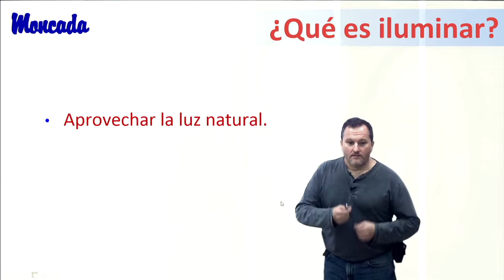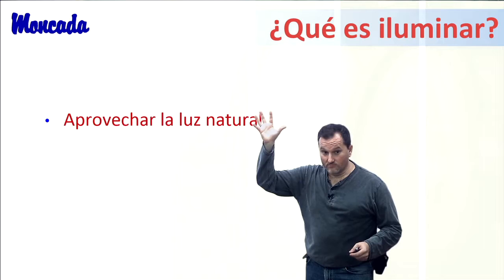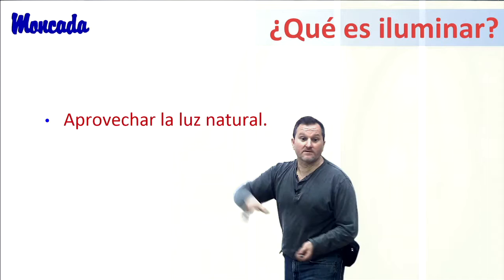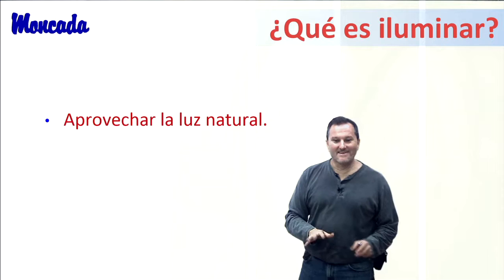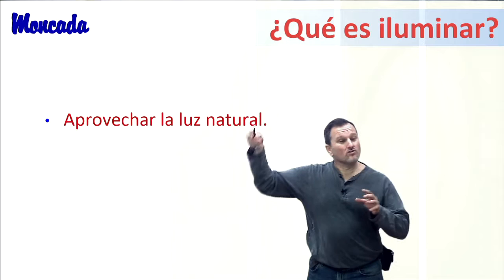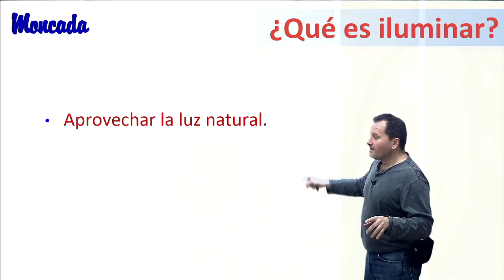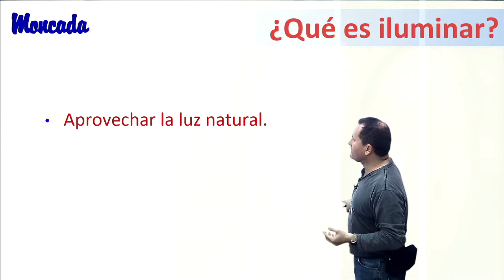¿Qué es iluminar? Para mí iluminar es a veces aprovechar la luz natural. Vas a una localización, te encuentras con un ventanal con luz entrando en tu escena y la quieres aprovechar. El problema de la luz natural es que puede cambiar con el paso del tiempo y eso no es controlable. A veces la quieres usar como luz ambiente y luego marcas con tu luz otra intención, pero hay que tener claro lo que va a ocurrir con ella.